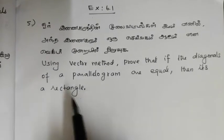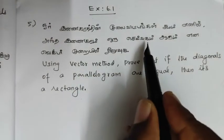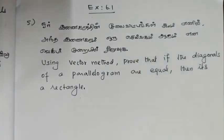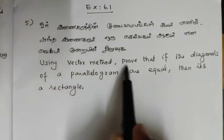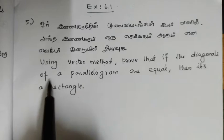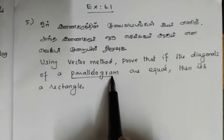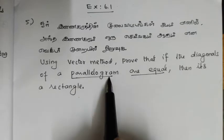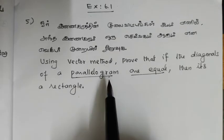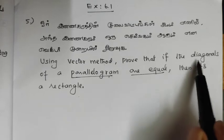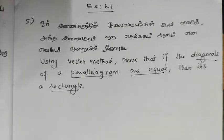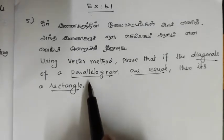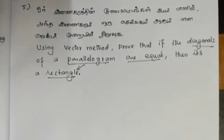Friends, this is xy6.1. If you have a rectangle, that rectangle is a small rectangle. You can see the vector. In English, prove that the diagonals of a parallelogram are equal. If we say diagonal of a parallelogram, we say equal. If we say parallelogram, we say rectangle.